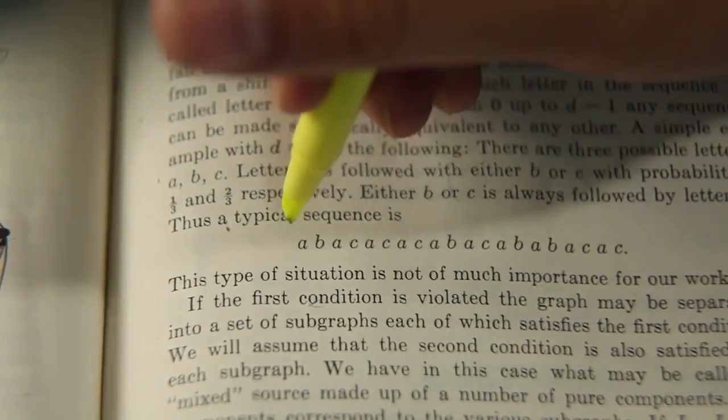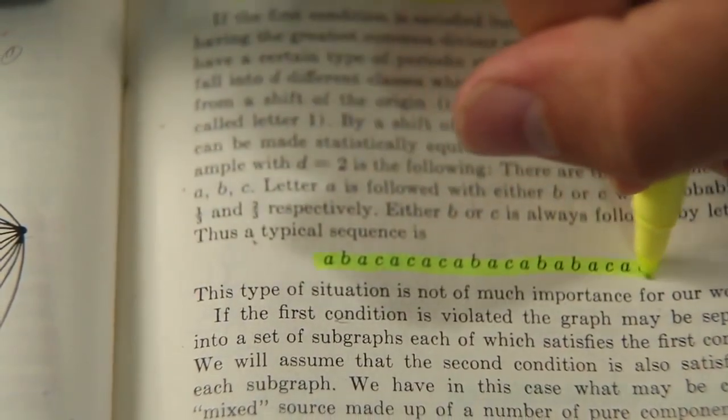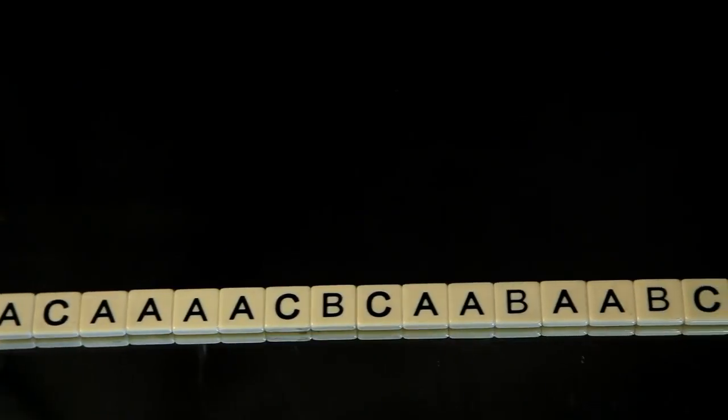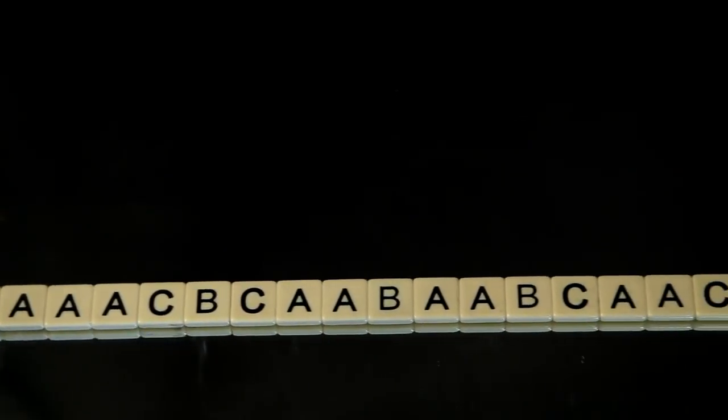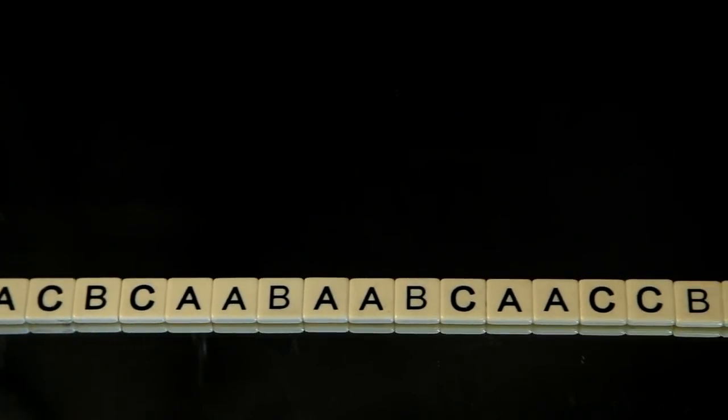Imagine you encounter text written in an alphabet of A, B, and C. Perhaps you know nothing about this language, though you notice A's seem to clump together while B's and C's do not.